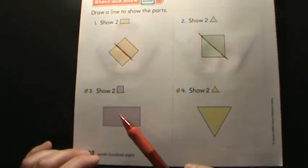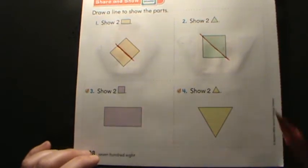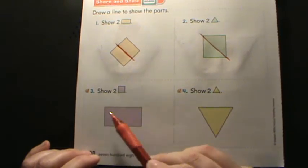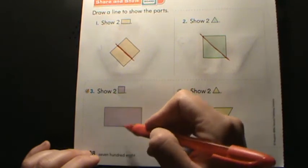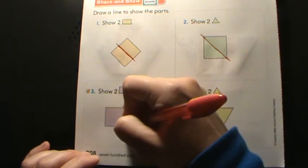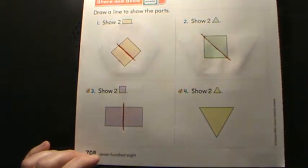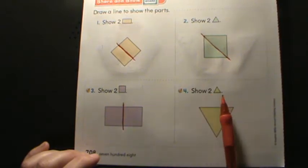Now it wants you to turn this rectangle into two squares. I can't divide it this way because that would make two skinnier rectangles. So I have to go down the middle here to turn those into squares. And then using this triangle, I have to show two triangles.